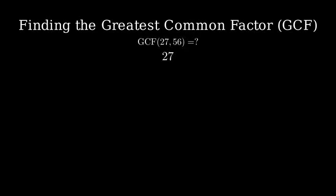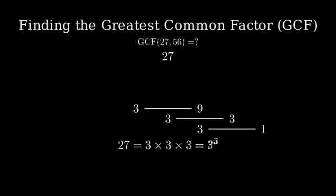Let's start by finding the prime factorization of twenty-seven. First we divide by three, which gives us nine. Nine divided by three is three. And finally, three divided by three is one. So, twenty-seven equals three times three times three, or three cubed.